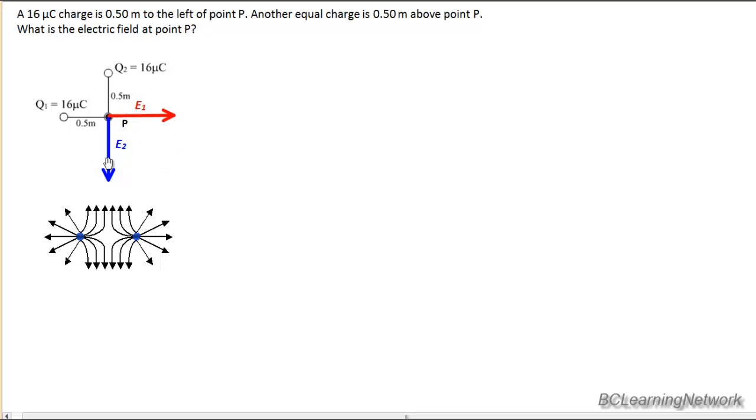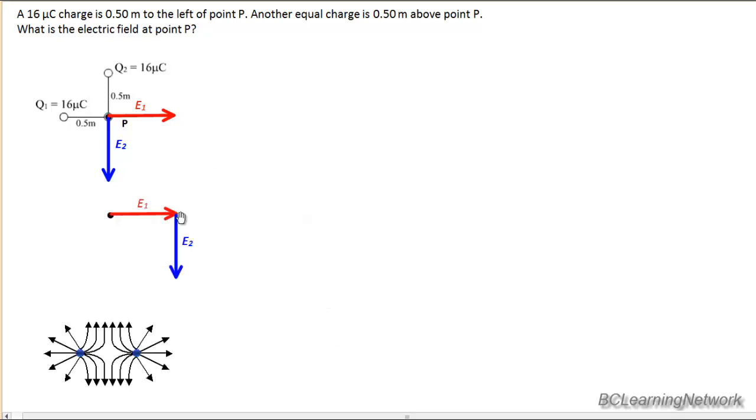So E1 tip to tail plus E2 should give me a net electric field pointed from where we started the diagram towards where we ended. So we see that my net electric field will be down towards the right at roughly a 45 degree angle. We'll calculate that in a second.